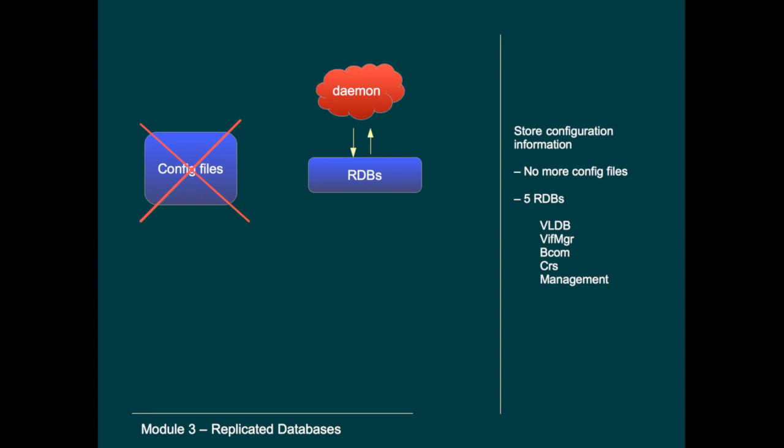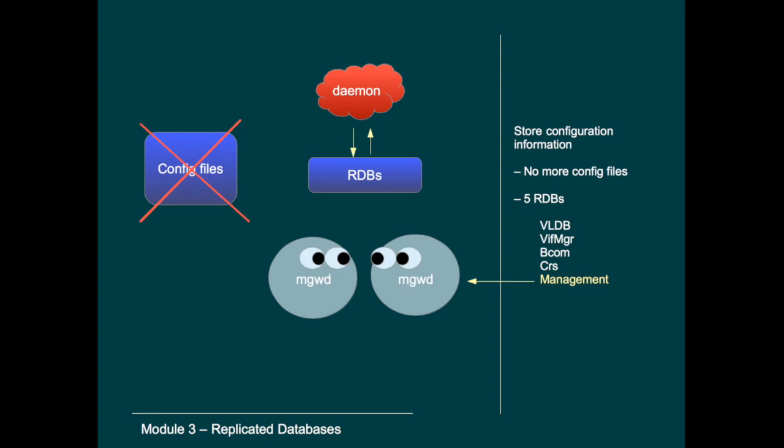The five RDBs are: VLDB for volumes and aggregates, VIF Manager for networking, BCOM for SAN config, CRS for SVM configuration and Metro Cluster, and Management for the rest. Management is also responsible for communication with other daemons to ensure updates from daemons of other nodes reach the respective daemons on the local node. The management gateway daemon is vital to the RDB ring, as it's called.